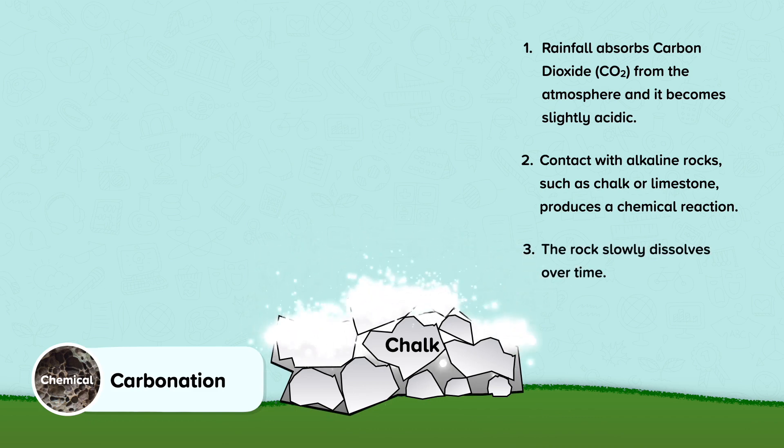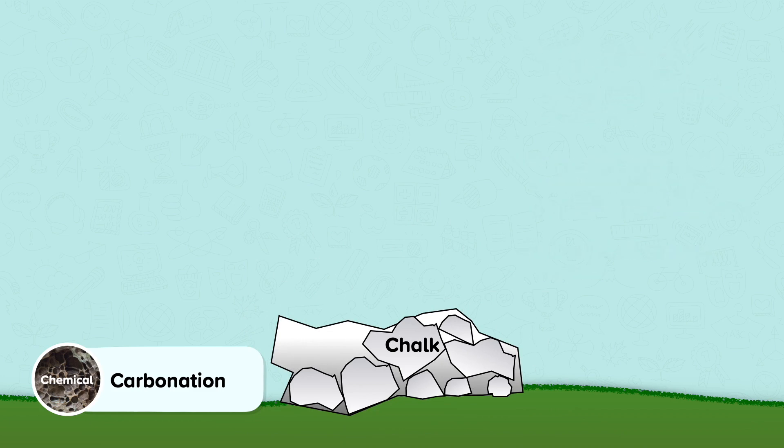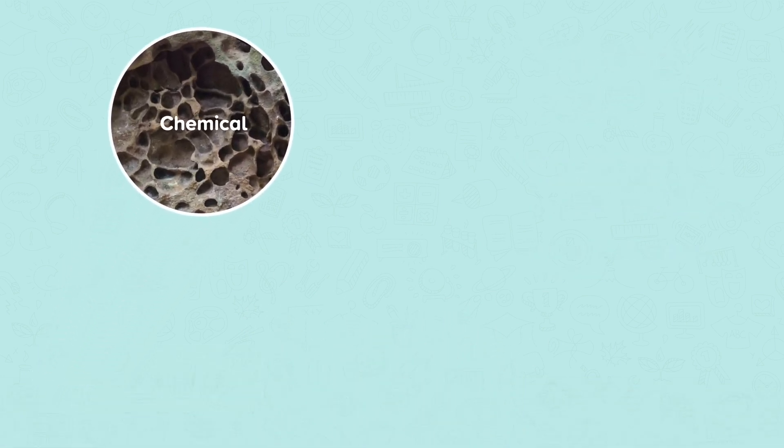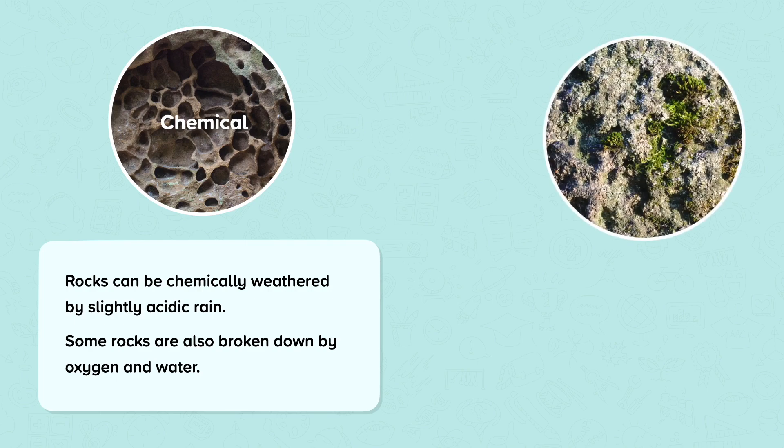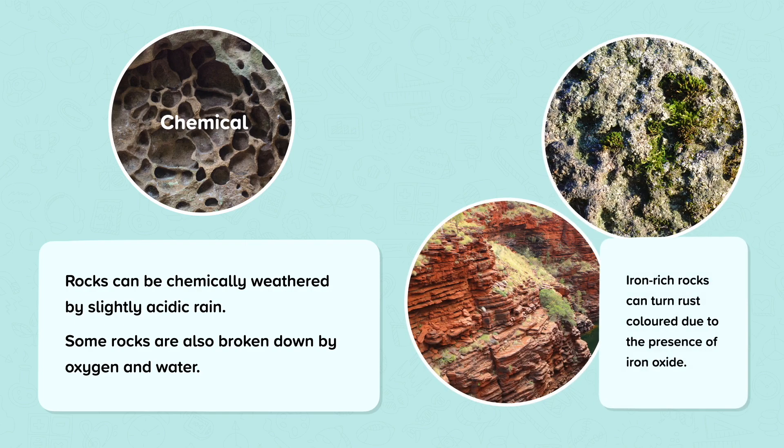The rock slowly dissolves over time. Rocks can be chemically weathered by slightly acidic rain. Some rocks are also broken down by oxygen and water. Iron-rich rocks can turn rust coloured due to the presence of iron oxide.